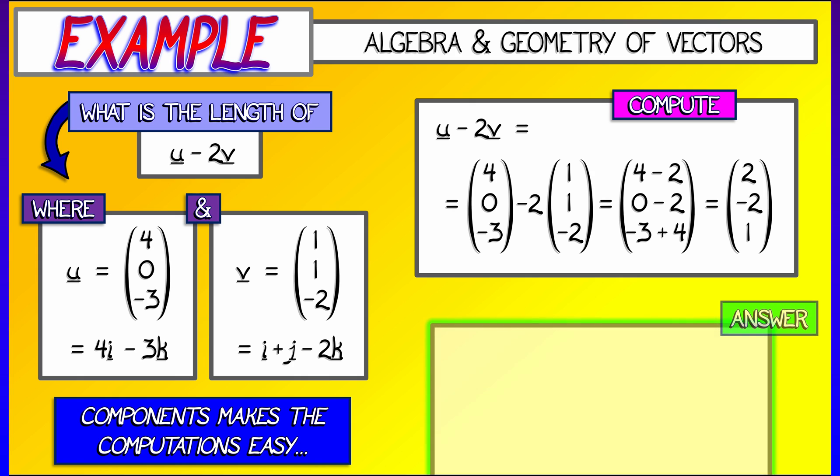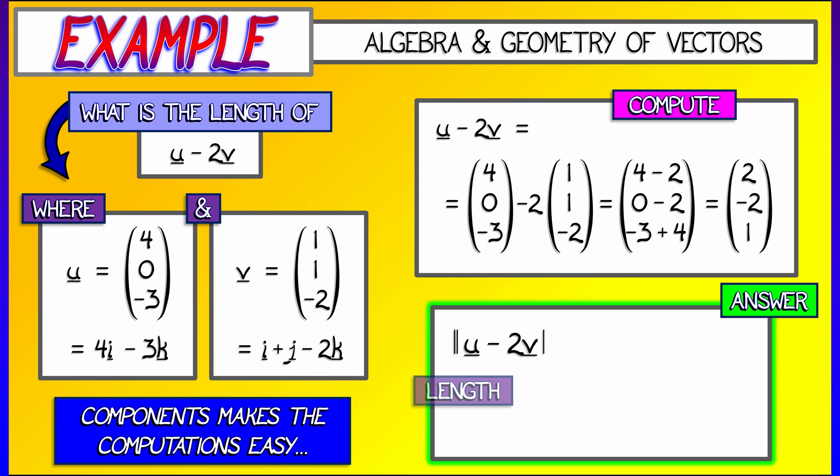And then, remember, we were asked to compute the length. So what we need to do is take the sum of the squares of the components. I take the square root of that. In this case, it's square root of 4 plus 4 plus 1, which equals 3. Simple.